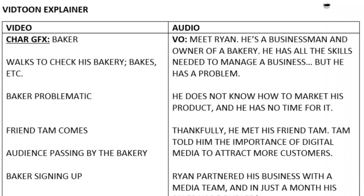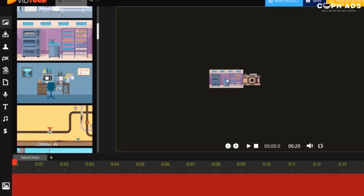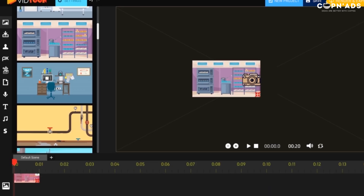To fully go through all the features, we will be creating a short explainer promo ad. I'll show you my script — it's a situational explainer story. Before starting the editing process, I already visualized what I want to see on my scenes, and I think that's very important. I'm going to start with my first scene, which should be in a bakery.